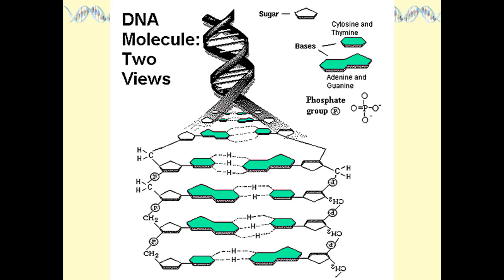In order to understand the polymerase chain reaction, it's helpful to review a little bit about DNA structure and DNA replication in the cell. This is a diagram you may have seen before of DNA — it shows that DNA is this incredible double-stranded molecule.